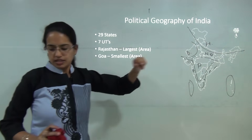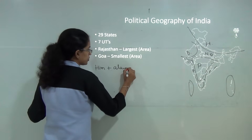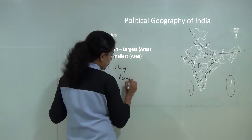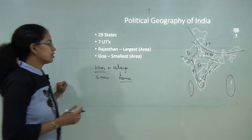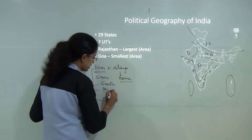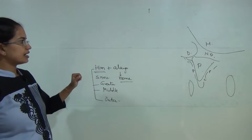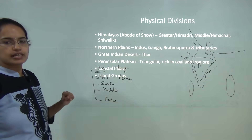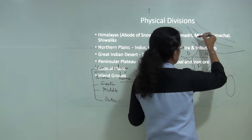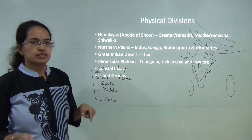The word 'Himalayas' comes from 'Him' meaning snow and 'Alay' meaning home — so Himalayas means 'home to snow.' The Himalayas are divided into three ranges: the Greater Himalayas, known as Himadri; the Middle Himalayas, known as Himachal; and the Outer Himalayas, known as the Shivaliks.